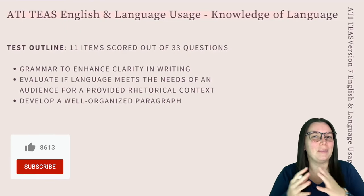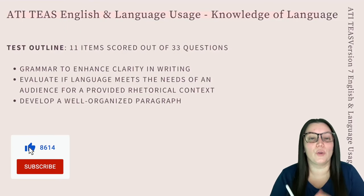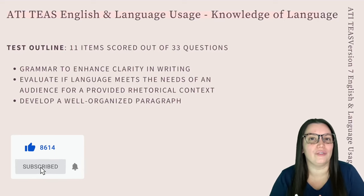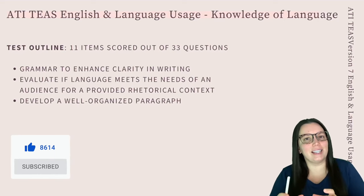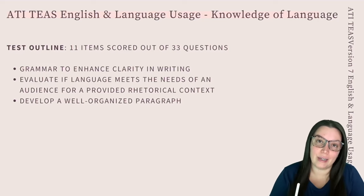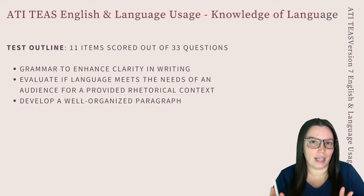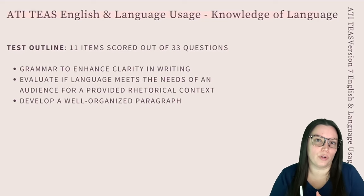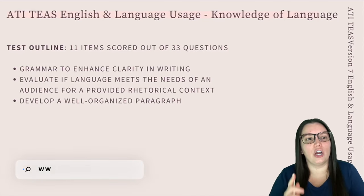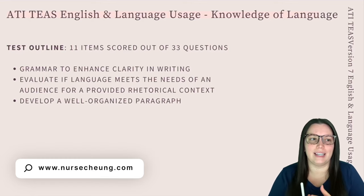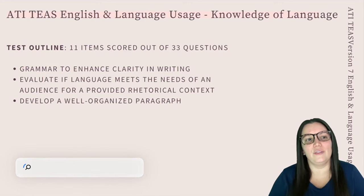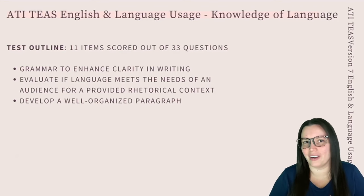As always, we begin by looking at our objectives. What you need to know for knowledge of language when it comes to the ATI TEAS is that this section is going to have 11 items out of the total 33 that will be scored for the test. What you'll need to know is grammar to enhance clarity in writing, evaluate if language meets the needs of an audience for a provided rhetorical context, and develop a well-organized paragraph.